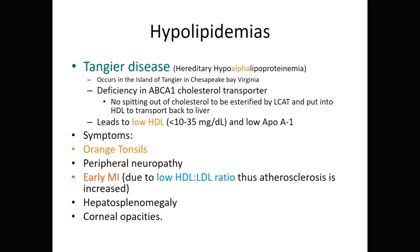Tangier's disease is only found in the Chesapeake Bay in Virginia. It is a genetic deficiency in your ABCA1 cholesterol transporter — the molecule that takes cholesterol out of your cell, spits it into the blood, allowing it to undergo the LCAT reaction to be esterified and picked up by HDL. Without this, we're not actually making mature HDL molecules. They remain nascent and floating around, so HDL is very, very low.